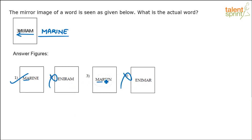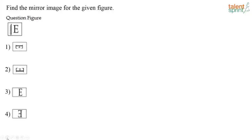Option 2 and 4 get eliminated very quickly. Then the sequence of M, A, R, E, I, N does not match — it should be M, A, R, I, N, E. So M, A, R, I, N, E — option 1. Find the mirror image for the given figure.